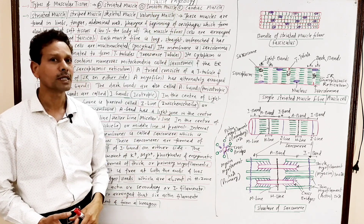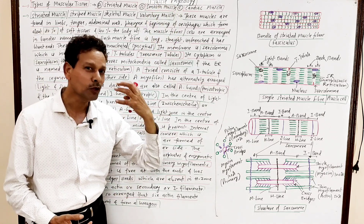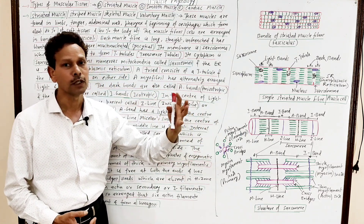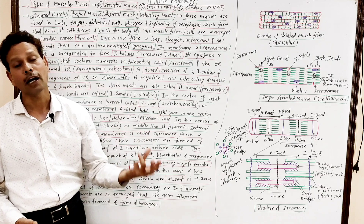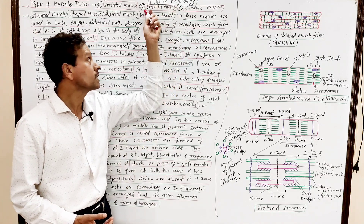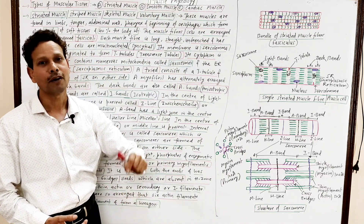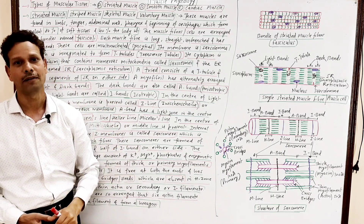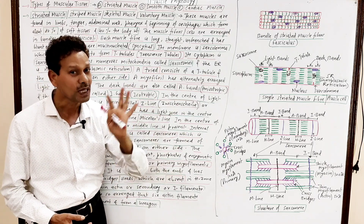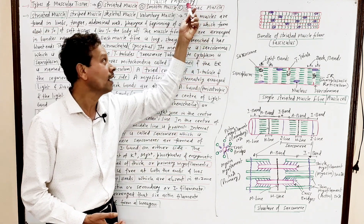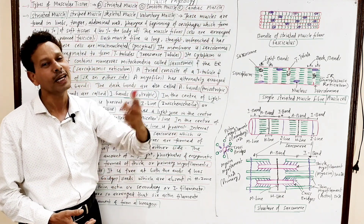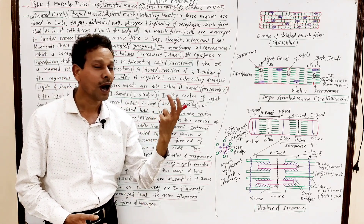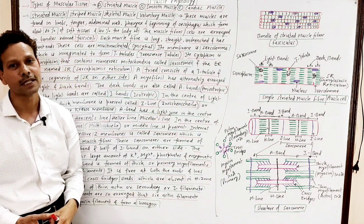The second type of muscles are smooth muscles. Smooth muscles have no bands — no strips, no light and dark bands. These smooth muscles are found in our internal body organs, the viscera, so these are named visceral muscles. The third type of muscles are cardiac muscles, found in the heart.